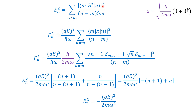We substitute H' = -QEX. Since this is a modulus square, the negative sign drops out — minus squared is plus. We take QE outside and introduce X = √(ħ/2mω)·(A + A†). Taking the square of the prefactor, the square root disappears and we get a factor of ħ/(2mω) outside the summation, with |⟨m|A + A†|n⟩|² inside.